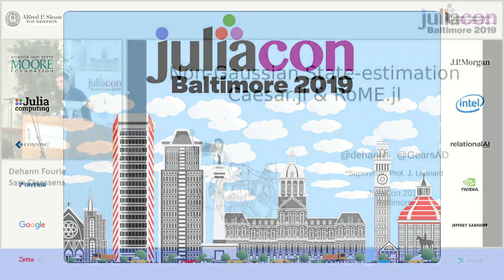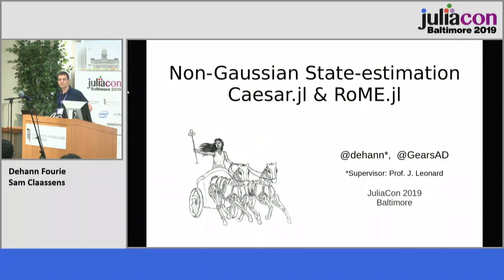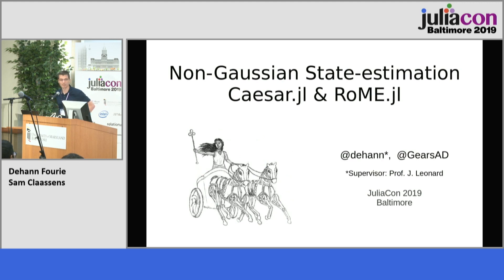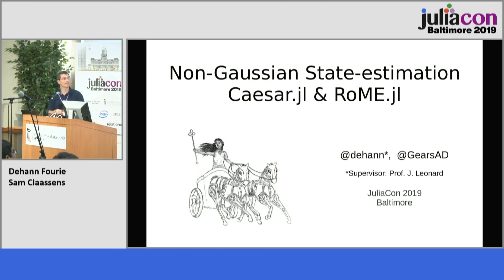I presented at JuliaCon in 2016, and it's maybe a good time to give an update of where we are. We're working on robot motion estimation — that's the Rome package — and Caesar is kind of the umbrella, but it actually depends on about 100 Julia packages underneath, so it's actually quite enormous.